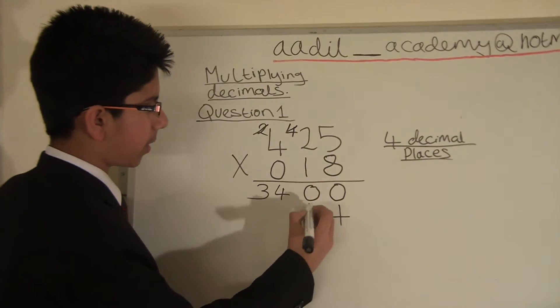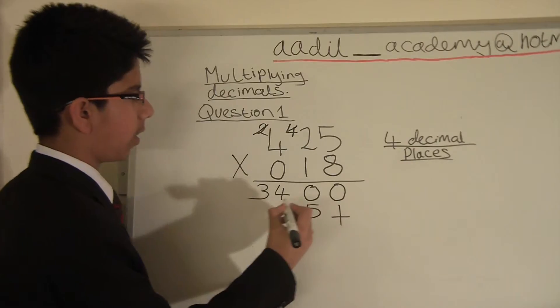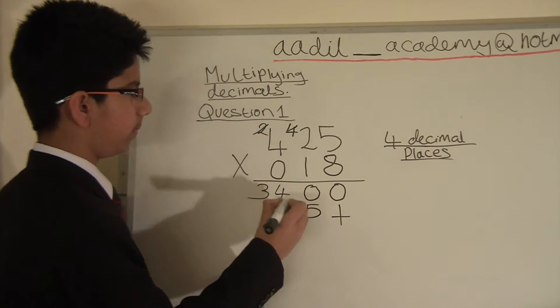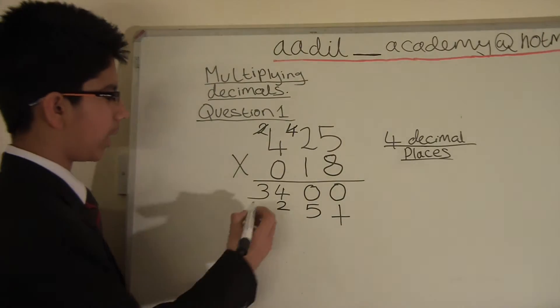1 multiplied by 5 equals 5. 1 multiplied by 2 equals 2. And 1 multiplied by 4 equals 4.